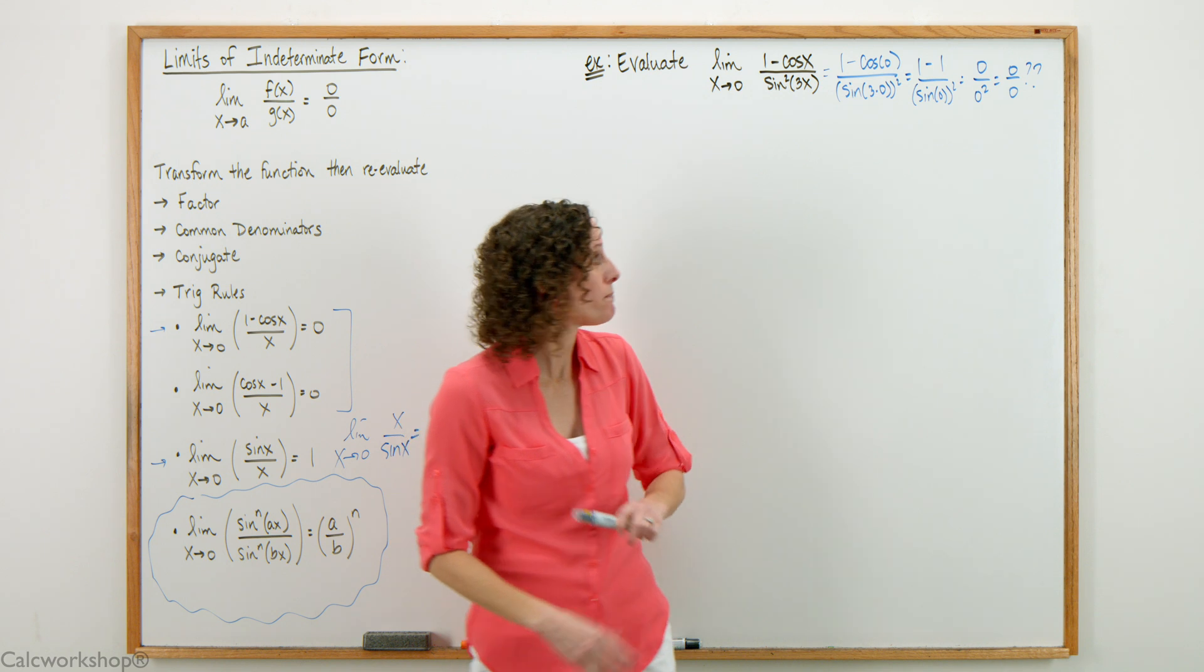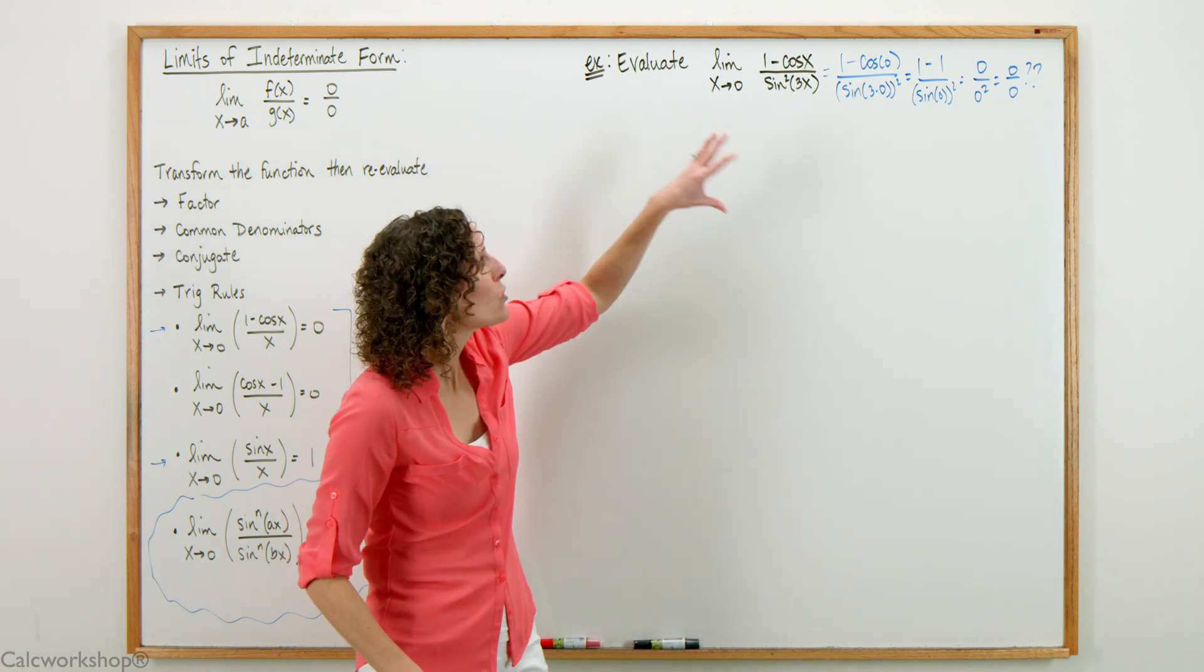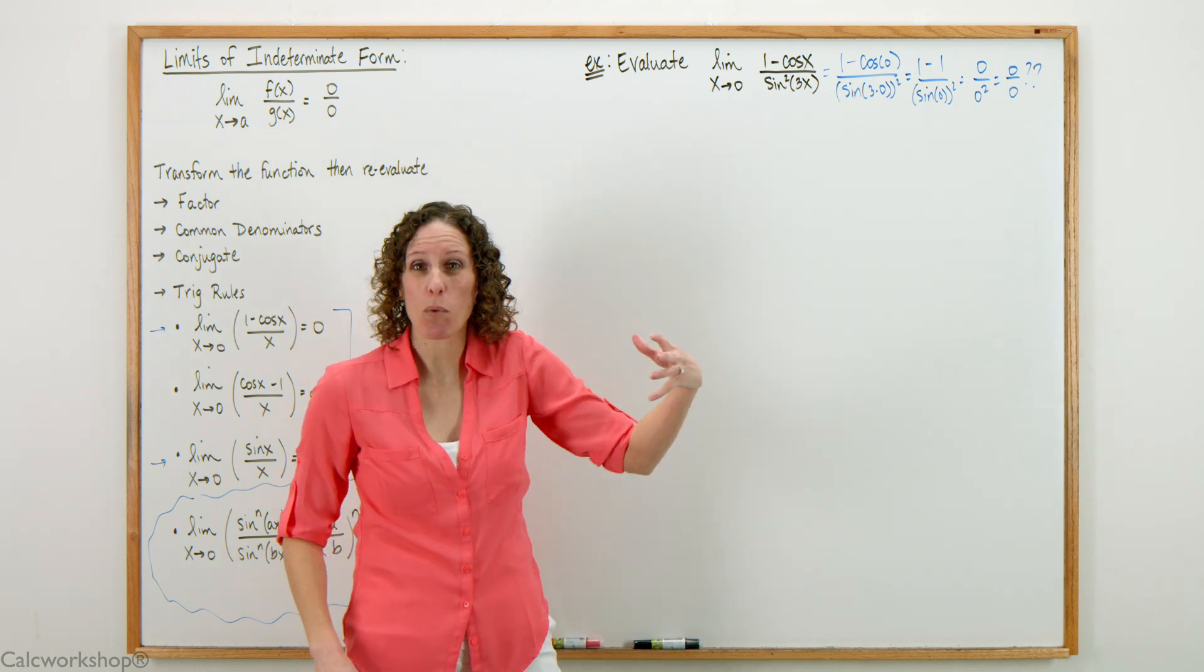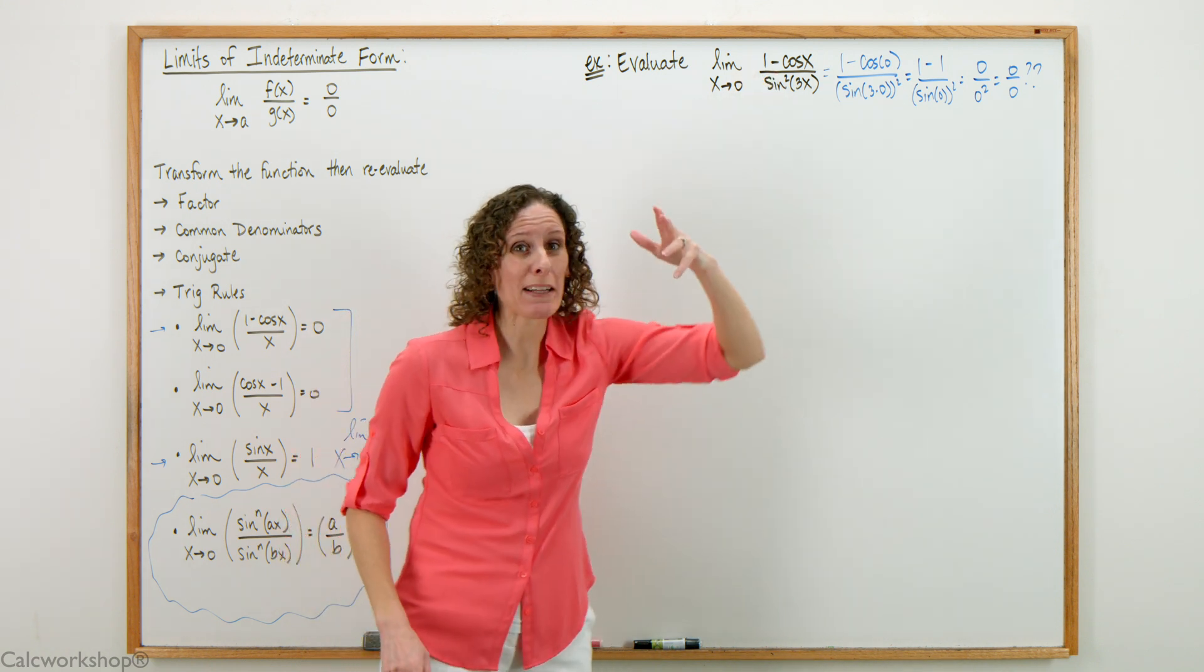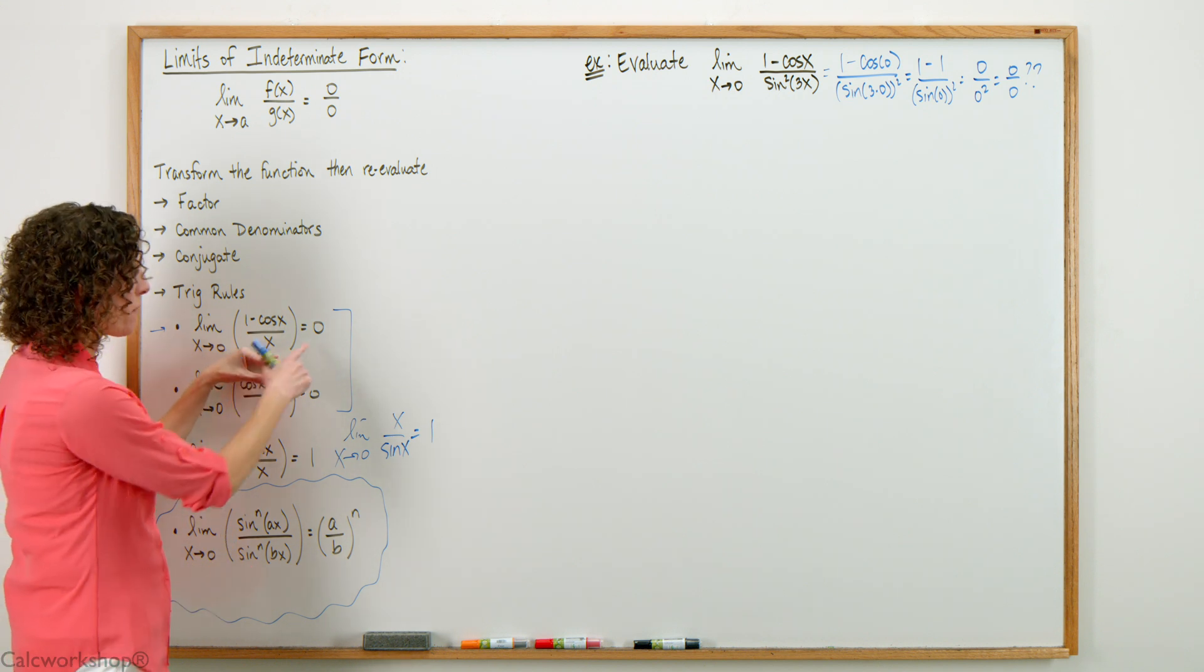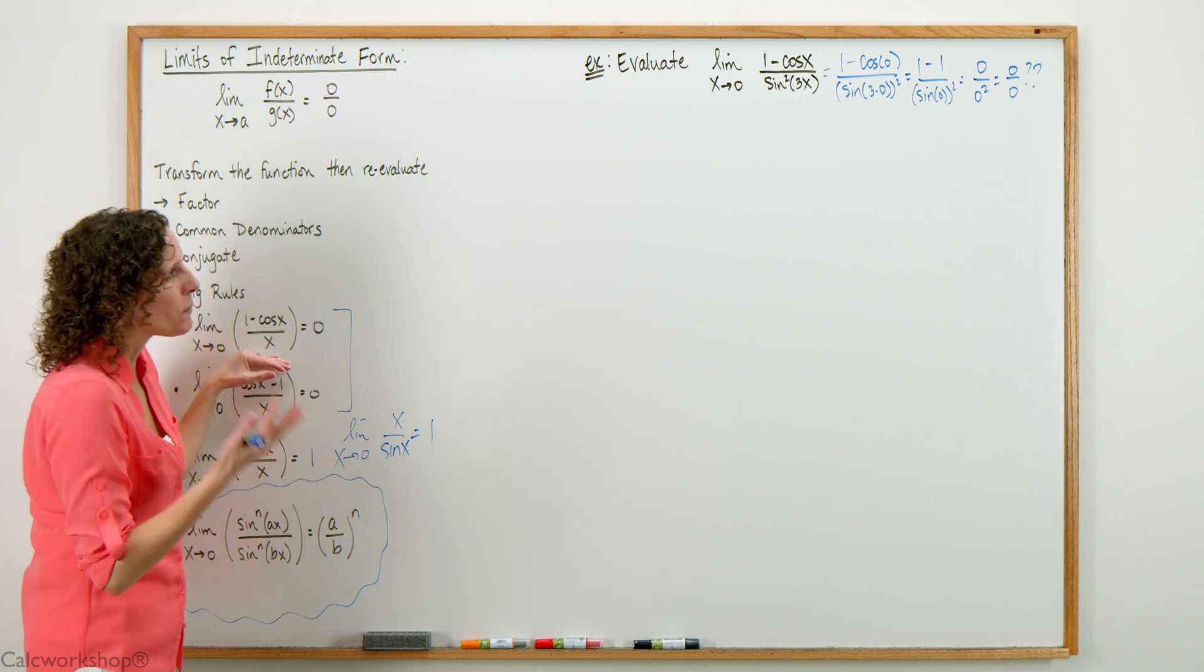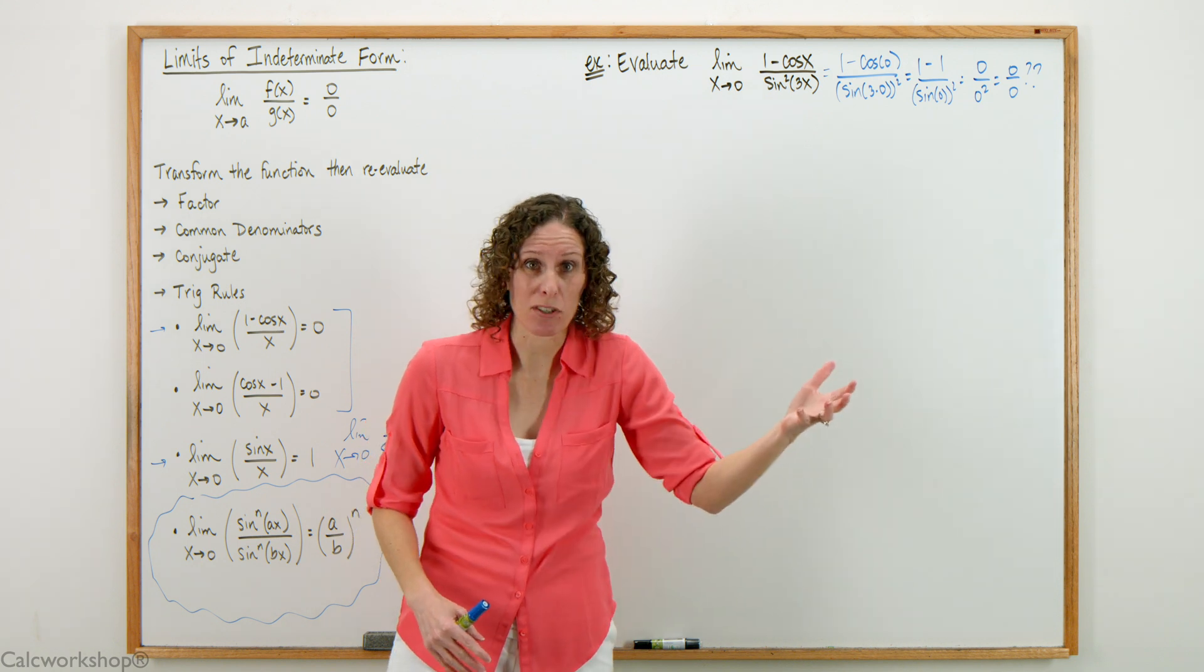Going back to our problem, we recognize it's a limit of indeterminate form, so we have to manipulate it. Because we have 1 minus cosine x, we think it would be great to get the x on the bottom and the whole thing goes to 0. The problem is there's no x on the bottom, it's a sine function.